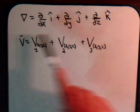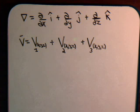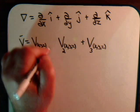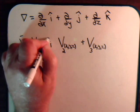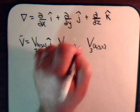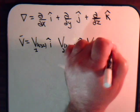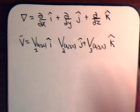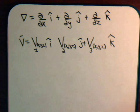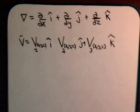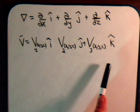Here is the del operator and here we have a vector that has V1, V2 and V3 components — this times unit vector i, unit vector j and unit vector k. Each one of these components V1, V2 and V3 can be some function of x, y and z.